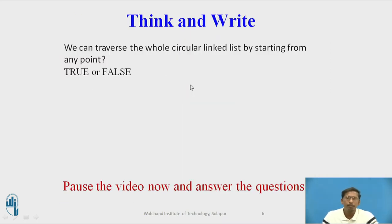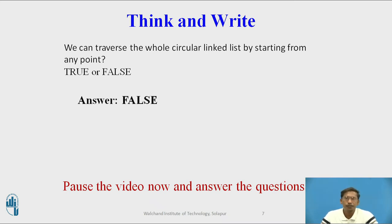You can answer this question — pause the video and answer. Statement: we can traverse the whole circular linked list by starting from any point. True or false? The answer is false. You cannot traverse a singly circular linked list or any circular linked list from any arbitrary point. For traversing, you require a global pointer — generally we use only one global pointer called start which always points to the first node. Using the first node, you can traverse.